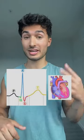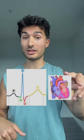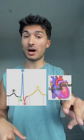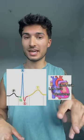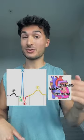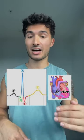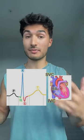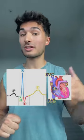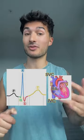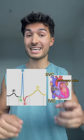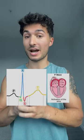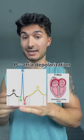Our heart has four chambers: two on top, the atria, and two on the bottom, the ventricles, with the AV valves in between. Blood comes into the right atrium from the vena cava, or into the left atrium from the pulmonary veins, and it squeezes — depolarizes — and that's the P wave.